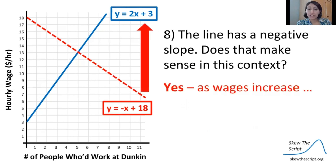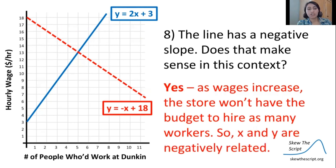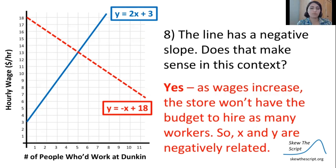This line has a negative slope. That makes sense: as the wage increases, the business is not going to be able to afford to hire as many people as they were in the past. So our x variable and y variable are moving in opposite directions — they're negatively related. That's the definition of a negative slope.